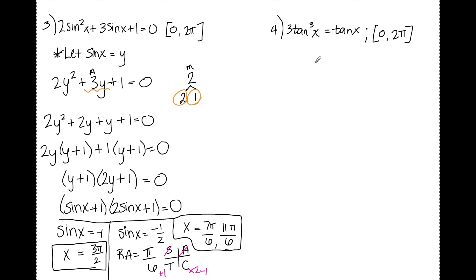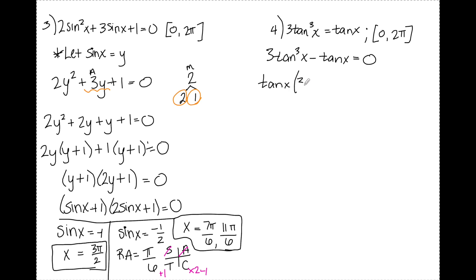Number 4. I notice the variable appears twice — I have tan cubed x and tan x. I can't solve this the way I did in number 1. Before I can factor anything, I have to get my equation equal to 0, so I subtract tan x to get 3 tan cubed x minus tan x equals 0. These two terms have a GCF of tan x, so factoring that out leaves tan x times 3 tan squared x minus 1 equals 0.